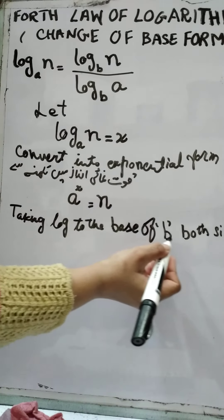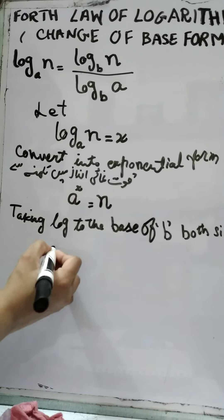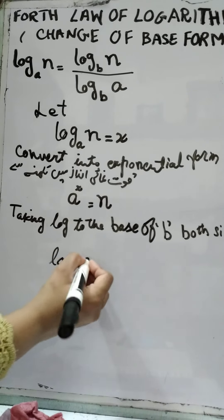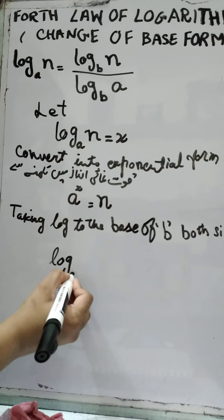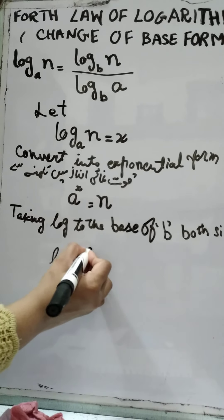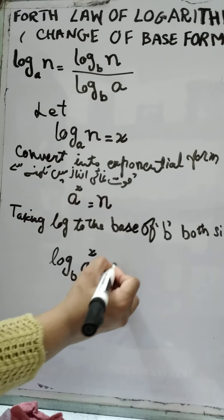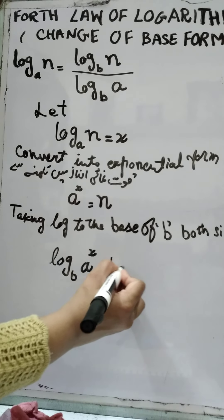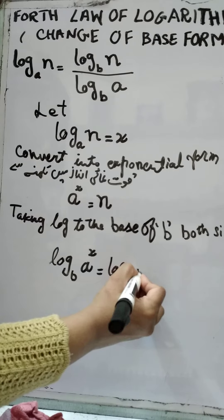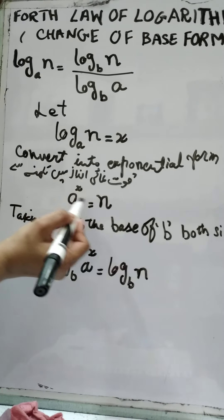We will take log to the base of b on both sides and we get log base b of a to the power of x is equal to log base b of n.